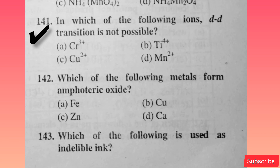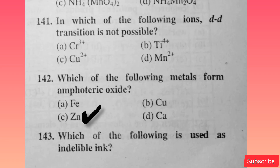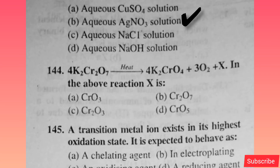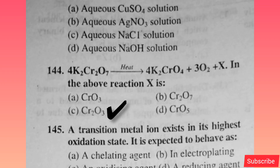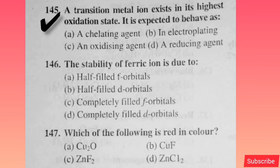In which of the following ions is d-d transition not possible? Option B is correct. Which of the following metals forms amphoteric oxide? Option C is correct. Which of the following is used as indelible ink? Option B is correct. In the reaction 4K2Cr2O7 on heat → 4CrO3 + 3O2 + X, the X is — option C is correct. A transition metal ion that exists in its highest oxidation state is expected to behave as — option C is correct.